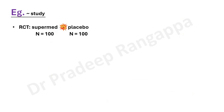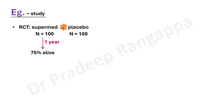Consider a randomized controlled trial comparing a 'super medication' versus placebo, with 100 patients in each group. At the end of one year, 75% are alive in the super medication group, and only 25% are alive in the placebo group. The difference is 75 minus 25, which is 50% — meaning this medication has helped an additional 50% of patients.